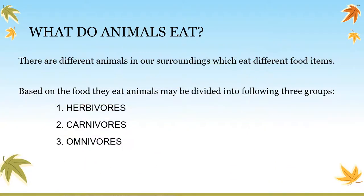There are different animals in our surroundings which eat different food. Based on the food they eat, animals are divided into three groups: herbivores, carnivores, and omnivores.